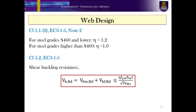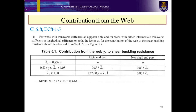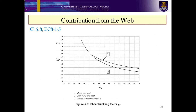Clause 5.2 in EC3 Part 1-5 provides a guideline for verifying the shear buckling resistance check, in which the contribution from the web is given by V_bw,Rd, and the contribution from the flange, i.e. V_bf,Rd, is given by Clause 5.4, EC3 Part 1-5. Next, the guideline for webs with transverse stiffness supports only, and for webs with either intermediate transverse stiffness or longitudinal stiffness, or both — the web contribution factor to the shear buckling resistance should be obtained from Table 5.1 or Figure 5.2. The guideline is given in Clause 5.8, EC3 Part 1-5. Here is the shear buckling factor given in Figure 5.2.